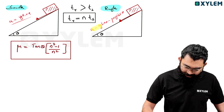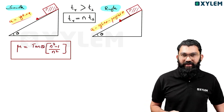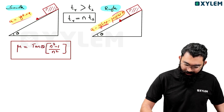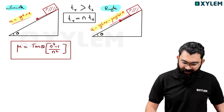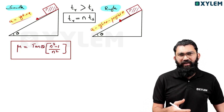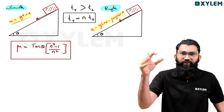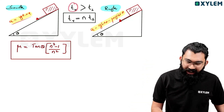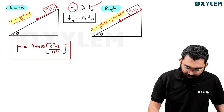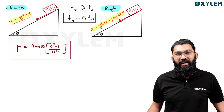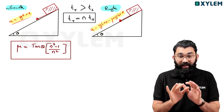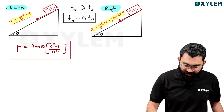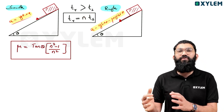With the smooth surface, the acceleration is g sin θ — one term only, so it is a little bit more. With the rough surface, the acceleration is g sin θ minus one term, so it is a little bit less. That is why the smooth surface object reaches the bottom faster. We say the rough surface takes n times the time of the smooth surface.